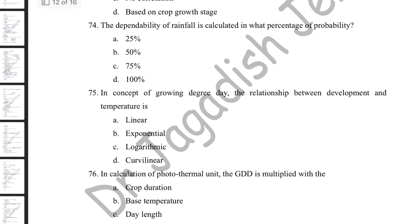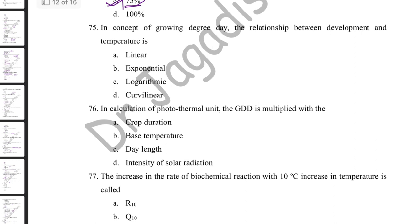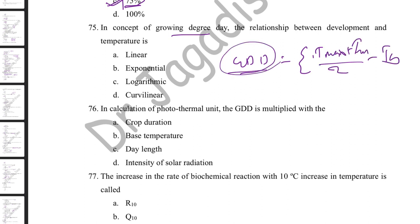The dependability of rainfall is calculated at 75% probability. The concept of Growing Degree Day (GDD) = Σ[(T_max + T_min)/2 − T_base]. GDD helps predict harvesting time and optimal sowing time. The relationship between development and temperature in GDD is assumed to be linear — which is a drawback or limitation of this concept.